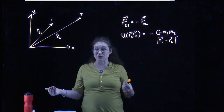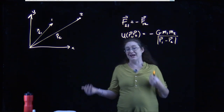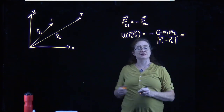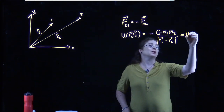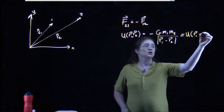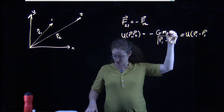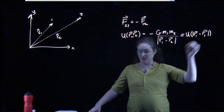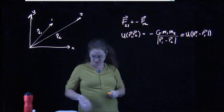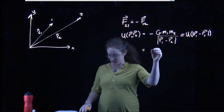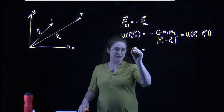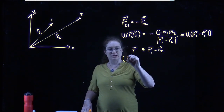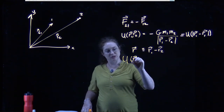The solutions we get today are the same form as what you'd get for the classical problem of the atom. Because the potential only depends on the difference between the positions, we define the vector r as r1 minus r2, so the potential is really only a function of that vector r.